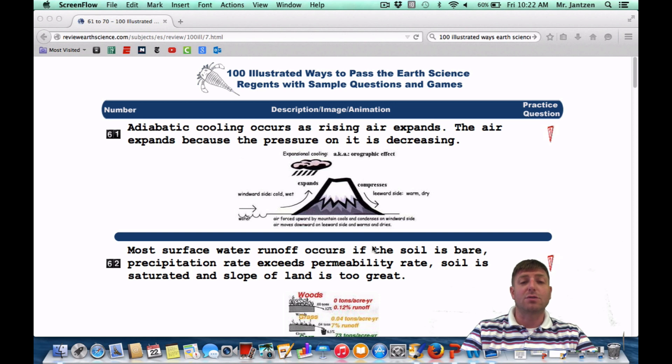Number 61: Adiabatic cooling occurs as rising air expands. The air expands because the pressure on it is decreasing. Once again, it's going to come off the water here, it's going to be forced up, it's going to rise, expand, and cool. It'll expand to the dew point and form clouds. Then it will come back down on this side. It will dry, compress, and heat up. This is called the leeward side, windward side versus leeward side.